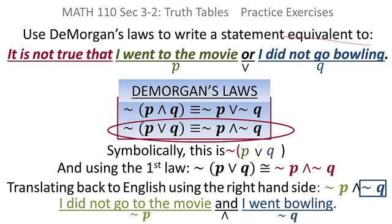Q was I did not go bowling. So not Q would be I went bowling.